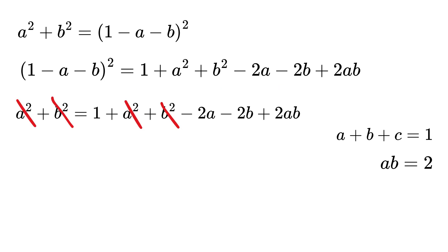A squared plus B squared will get cancelled from both sides, and we will be left with 1 minus 2A minus 2B plus 2AB equals 0.